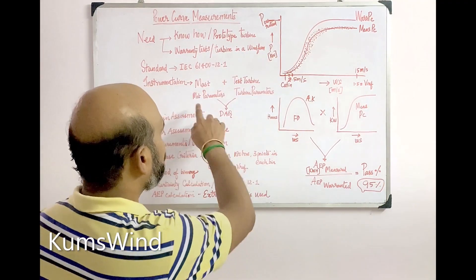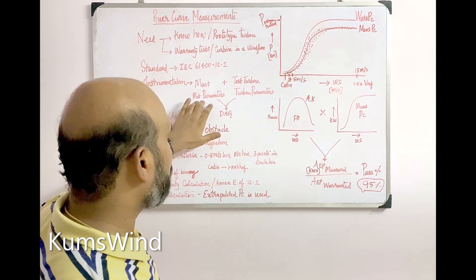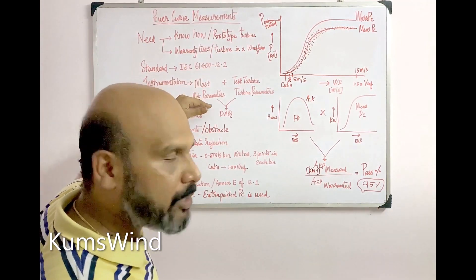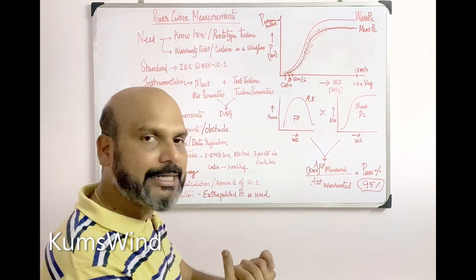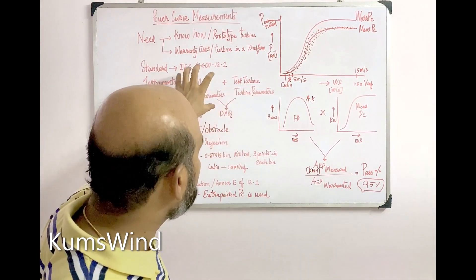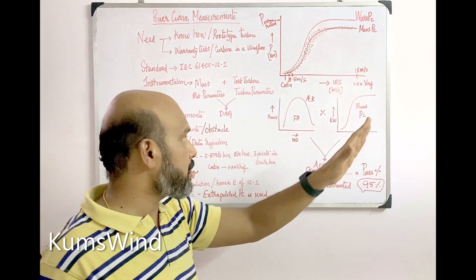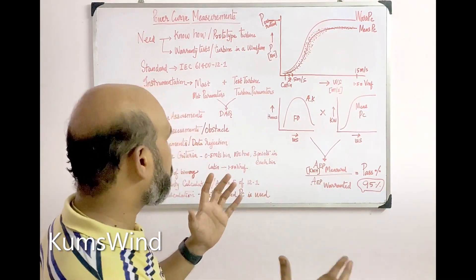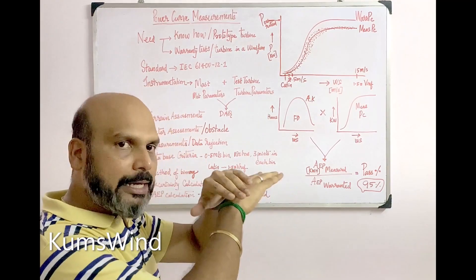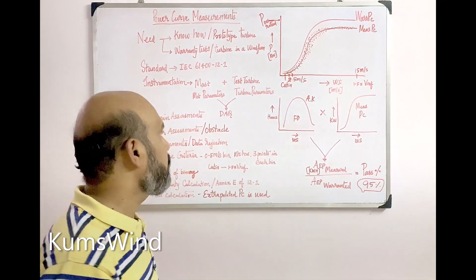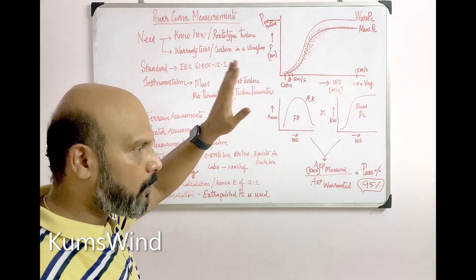From the mast you measure meteorological quantities: wind speed, wind direction, humidity, temperature, pressure, and rain, using Class 1 sensors. From the turbine side you need to measure active power, reactive power, frequency, and the operational status of the turbine. All these meteorological parameters and turbine parameters are pulled into a data acquisition system, either in the met mast or the turbine control room, collected in one data logger with one time stamp.